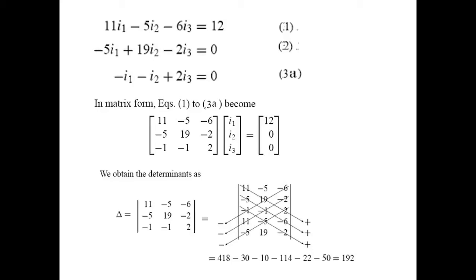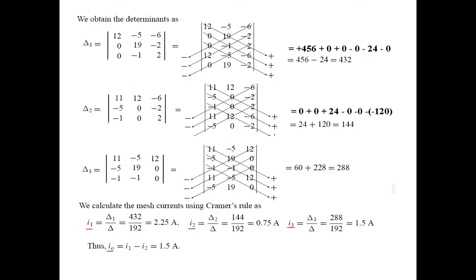To find delta 1, we replace the first column with the output 12, 0, 0, and by the same technique of repeating the first two rows and multiplying, we get delta 1 equals 432. For delta 2, we replace the middle column with the output, and by solving we find delta 2 equals 144. For delta 3, we replace the third column with the output, and we find delta 3 equals 288.